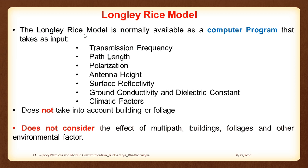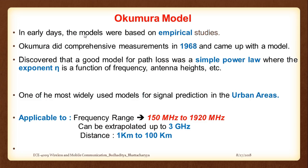This leads to the 1968 Okumura model, developed in Japan. It is a very famous model specifically used for outdoor environments. Models were based on empirical studies — you go making measurements, fit the curves, and get the result. Okumura made measurements across the urban cities of Japan, going with a power meter measuring the power loss happening over distance.